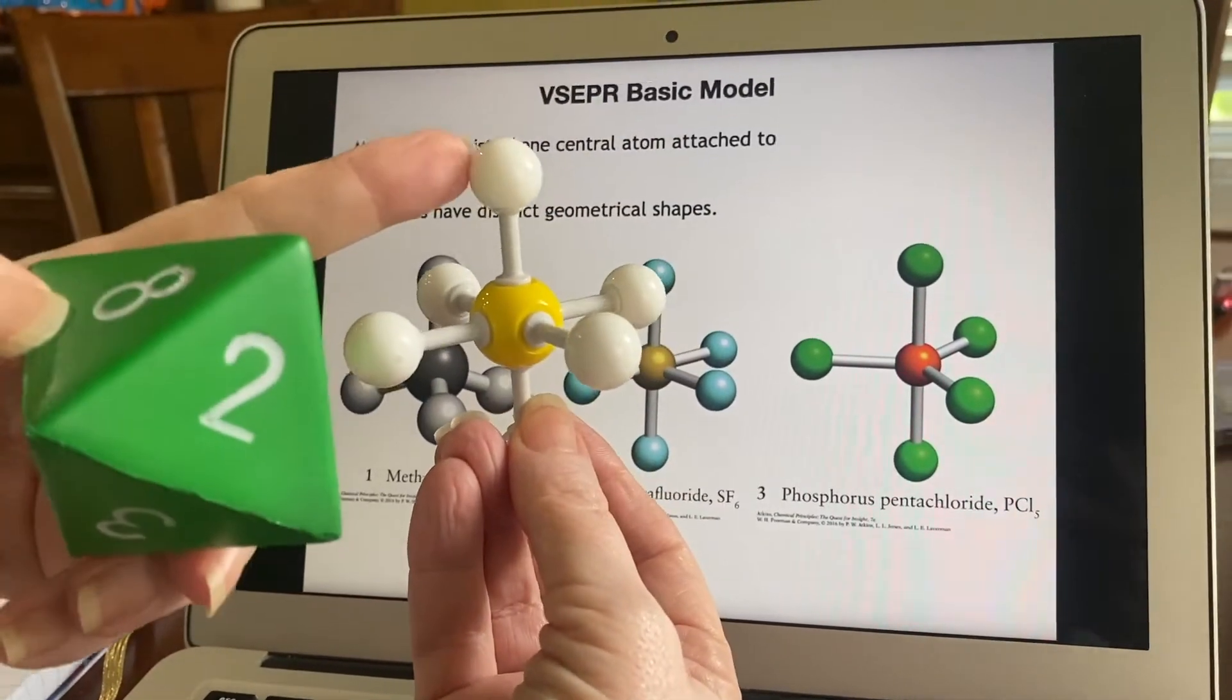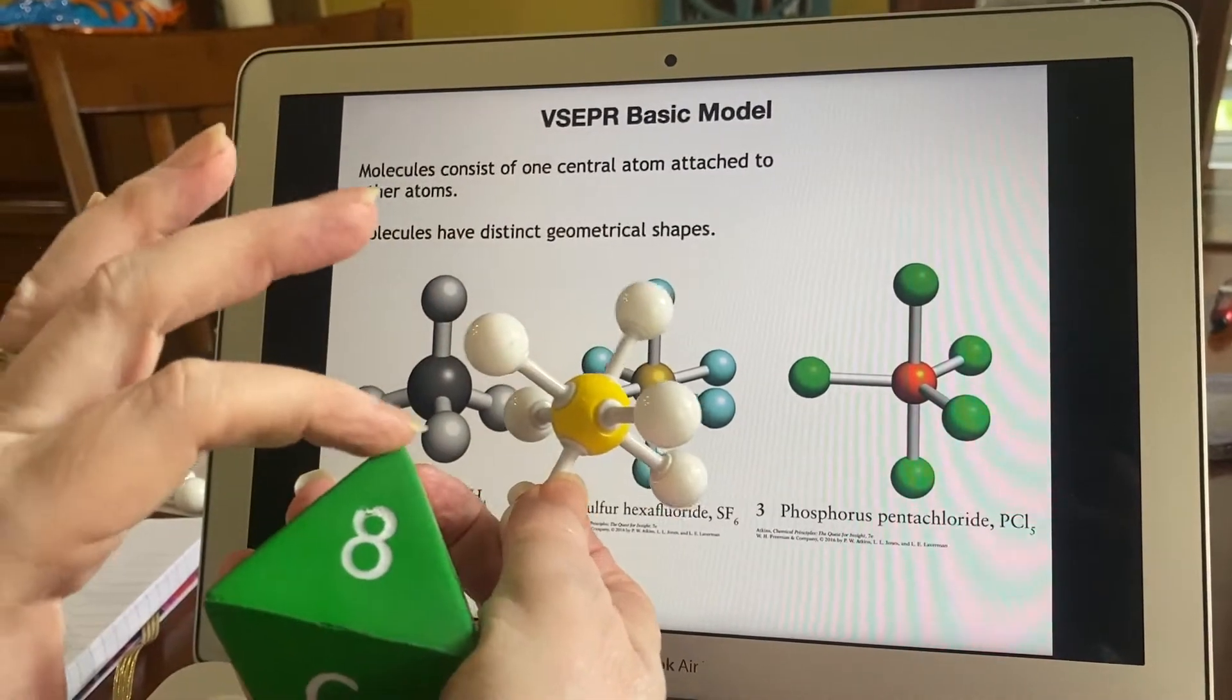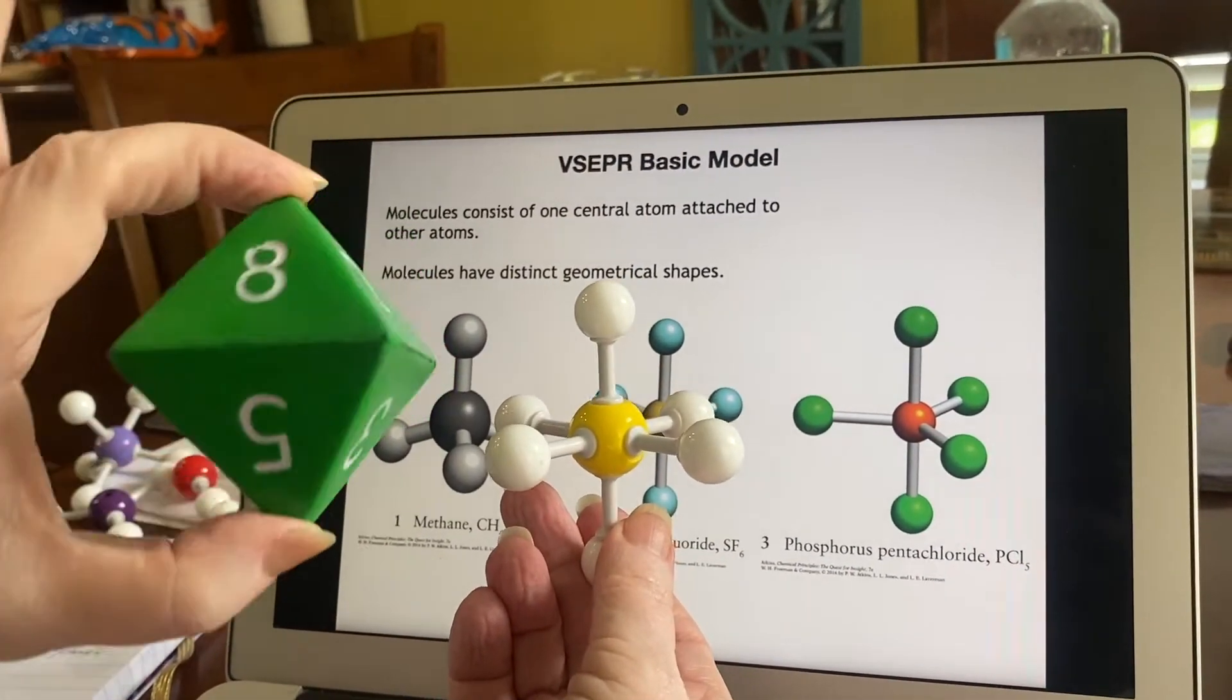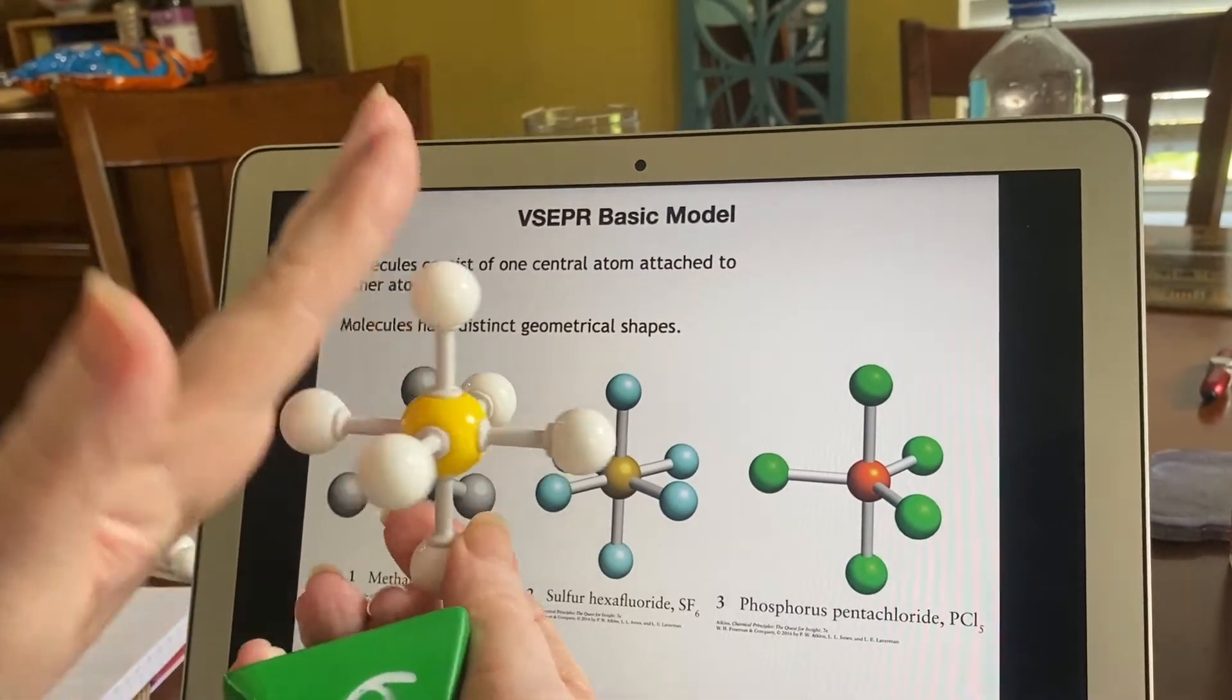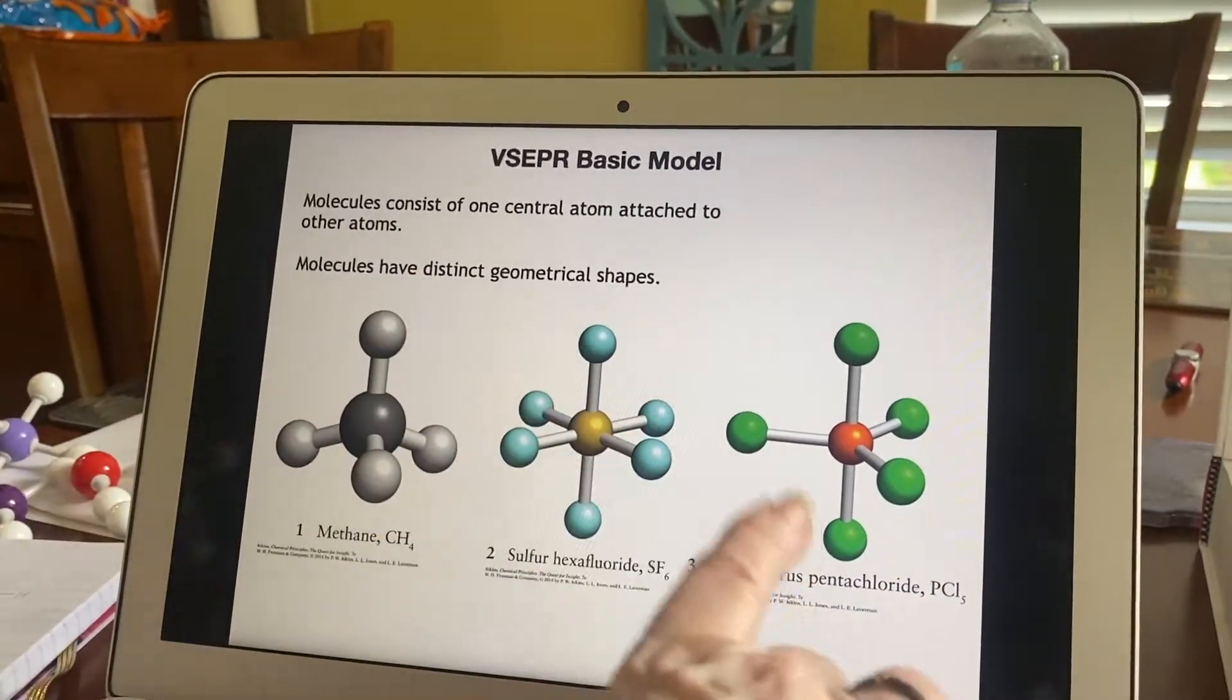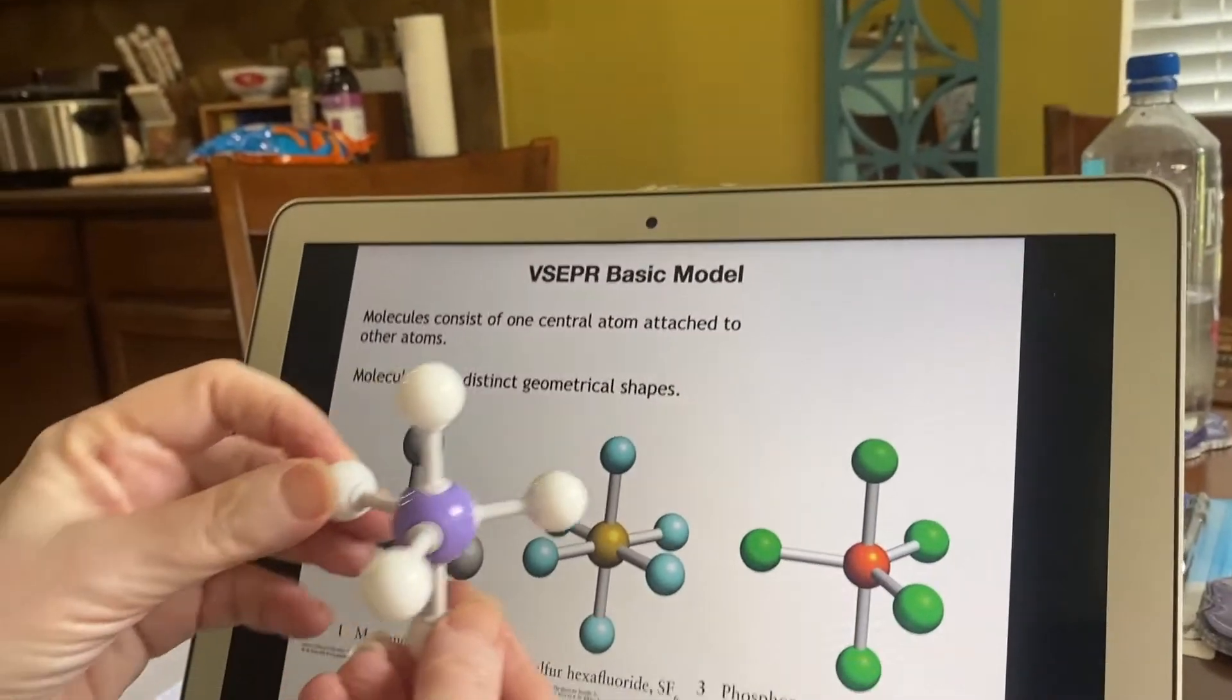But remember, the atoms are where the vertices are. So if I put my fingers where the vertices are, I can see that I have a total of six vertices, eight sides, because the sides are these planes here. But I'm interested in the points, not the planes, and phosphorus pentachloride. All right. So there we go. There it is.